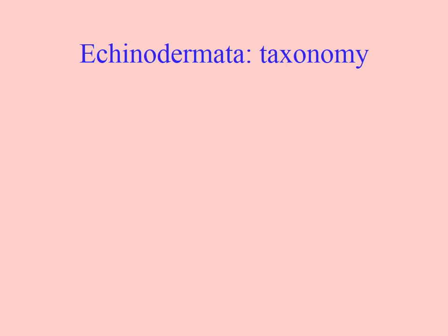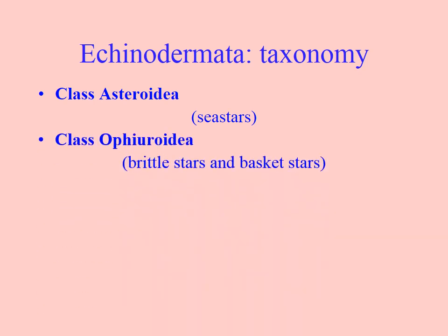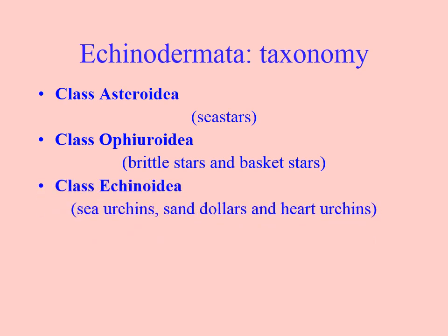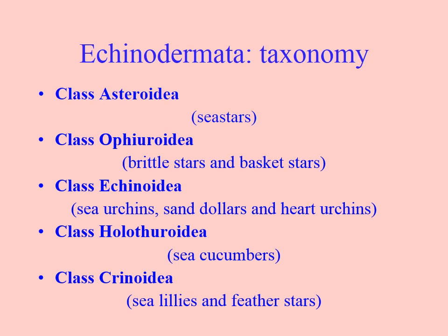We'll jump right into it with the taxonomy. There are five different classes that you'll be responsible for: the Asteroidia, which are the sea stars; Ophiroidia, brittle stars and basket stars; Echinoidia, sea urchins and sand dollars; Holotheroidia, which are sea cucumbers; and finally Crinoidia — crinoids, sea lilies and feather stars.